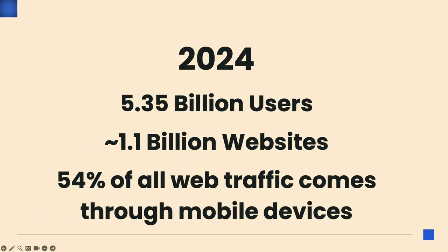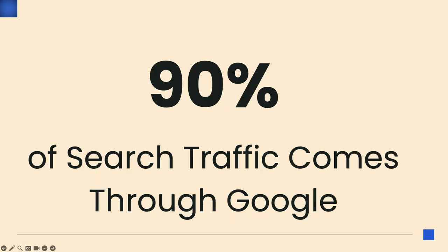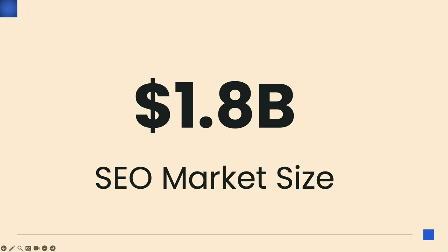In 2024, the web ecosystem looks like this: we've got 5.35 billion users, over a billion websites, and 54% of all traffic comes through mobile devices. Just in 24 years, the amount of adoption, change, competition, and need to stand out has built enormously in this space. Think about SEO — 90% of search traffic comes through Google. Google is a trillion-dollar company because of search, because of providing users a way to sift through all this data. SEO is a $1.8 billion market because of this content growth, and with all this noise they're building whole industries just to stand out.